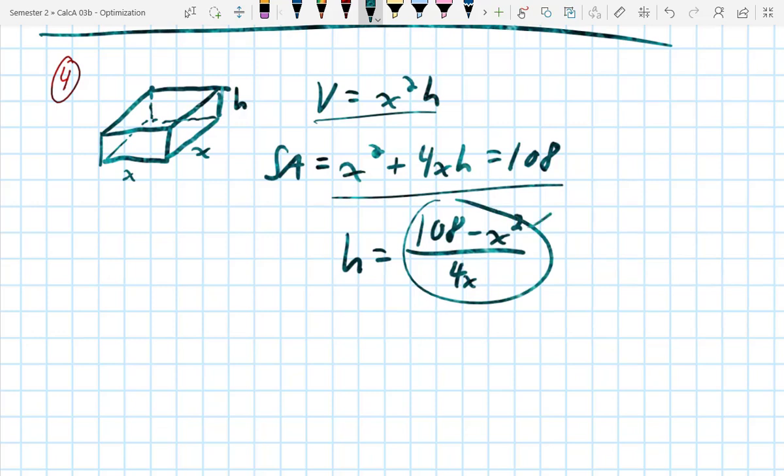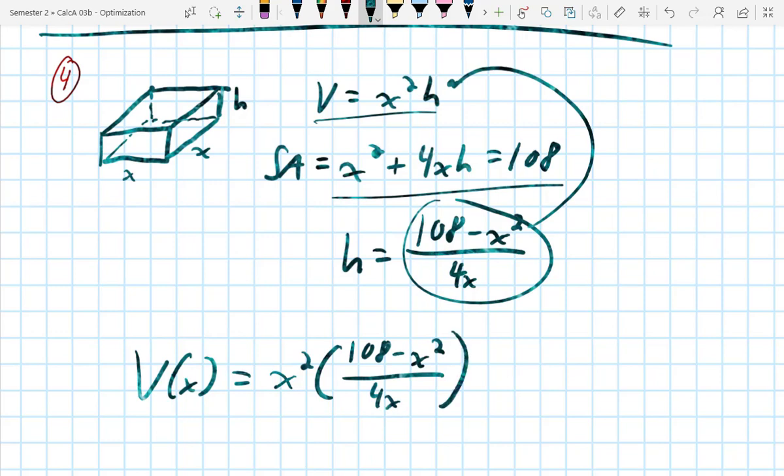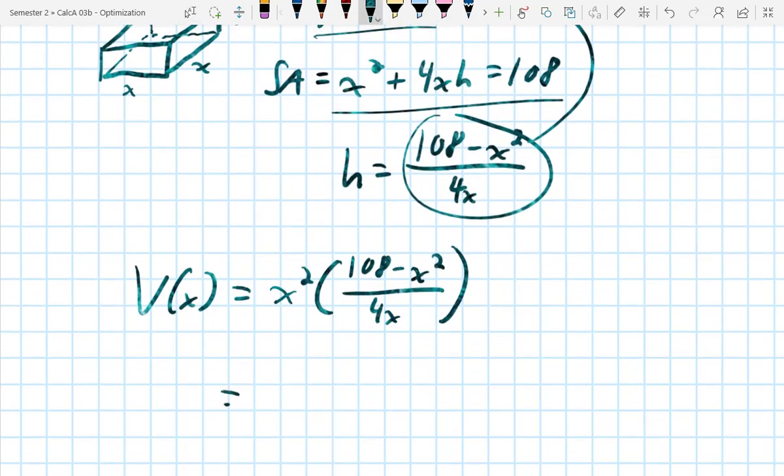If I take this and plug it in here, we have actually less than that, I get volume in terms of x is equal to x squared times 108 minus x squared over 4x. And just to show that that's going to be even easier of a function than you think it is, if I multiply that in, my x's are going to cancel and I just get 108 fourths x, which you can simplify that down, minus 1 fourth x cubed. And that's not terrible to take a derivative of.